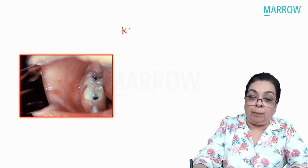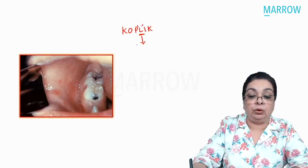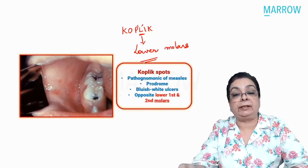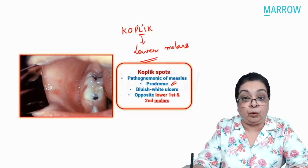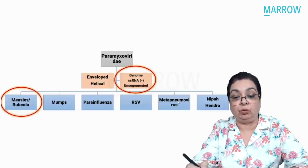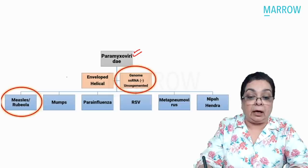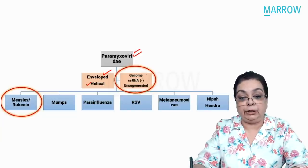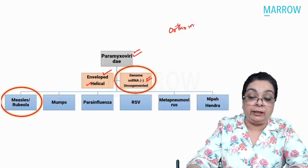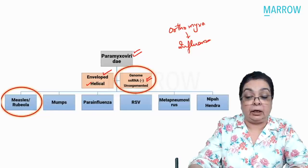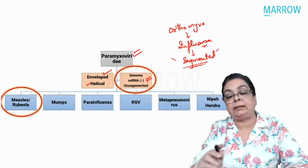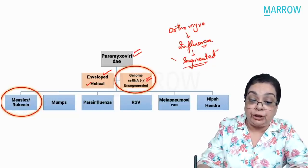Koplik's spots — the word Koplik contains the letter L, so remember they are mostly seen against the lower molar teeth. They are pathognomonic of measles, seen in the prodromal phase, and disappear once the rash appears. They are bluish-white ulcerations mostly seen against the lower first and second molars. Paramyxoviruses are enveloped with helical symmetry. Their genome is single-stranded RNA and it is unsegmented. Orthomyxoviruses, which contain influenza, are closely related but have a segmented genome of seven or eight segments. Paramyxoviruses have an unsegmented single-stranded RNA genome which is negative sense.